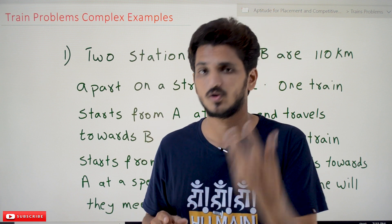Distance covered by train B is 25(x − 1), because B started one hour late, so it only travels for x − 1 hours. They both meet at the same time, meaning they traveled equal amounts of time before meeting. The summation of both distances equals the total distance: 20x + 25(x − 1) = 110 kilometers.